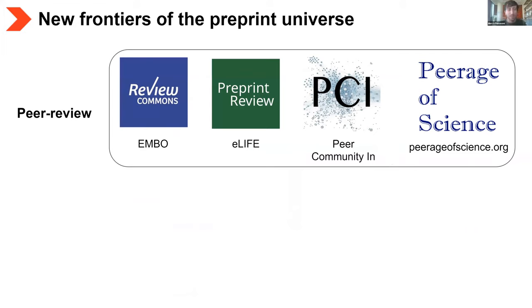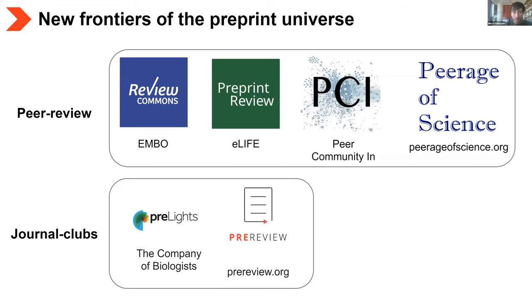To conclude this short presentation, we'd like to mention some of the most exciting initiatives gravitating around the preprint universe. The first involves independent initiatives to perform and associate scientific peer review — made by scientists — for preprints available on servers. The second involves journal clubs and commentaries run independently by the community on preprints, with the aim of highlighting interesting preprints or providing authors with useful feedback before publication. There are other initiatives in addition to these, and we encourage people to look them up online.